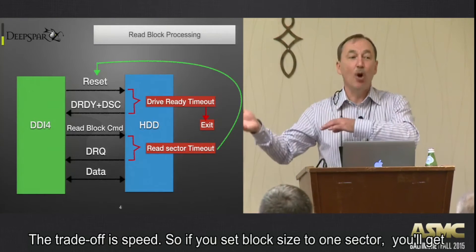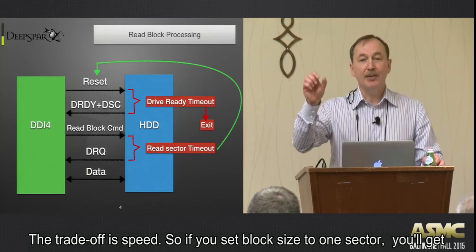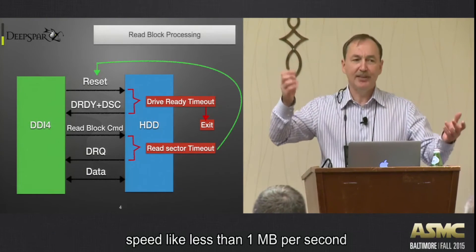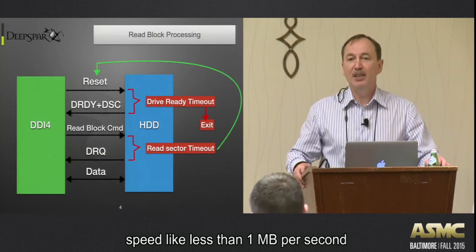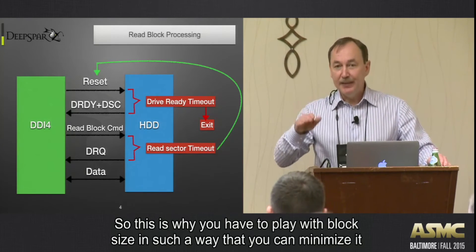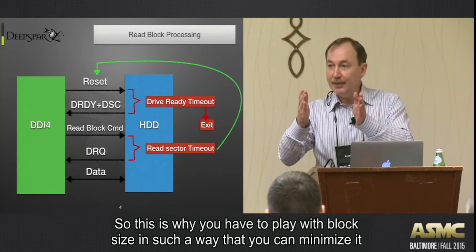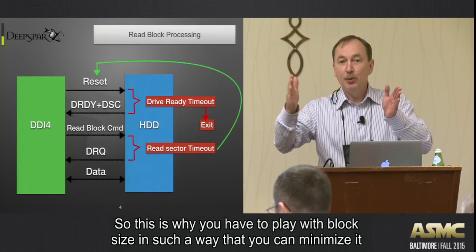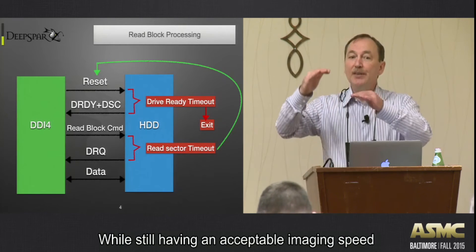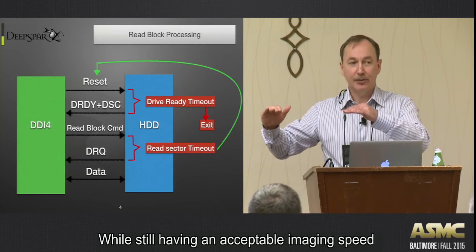But the trade-off is speed. If you set block size to one sector, you will get a speed of something like less than one megabyte per second. So you will wait forever. That's why you have to play with this block size in such a way that you minimize it as much as possible while still having an acceptable imaging speed.